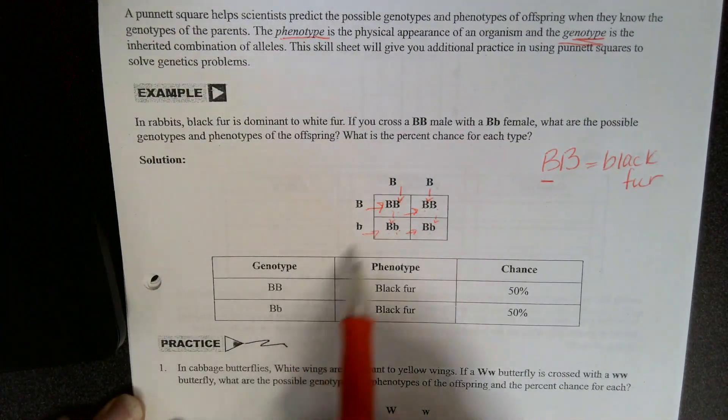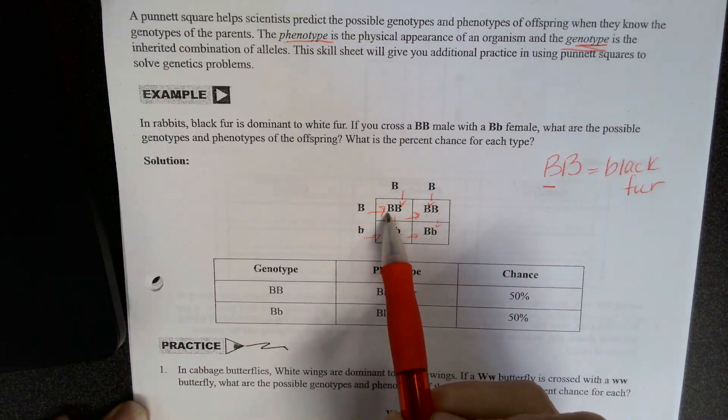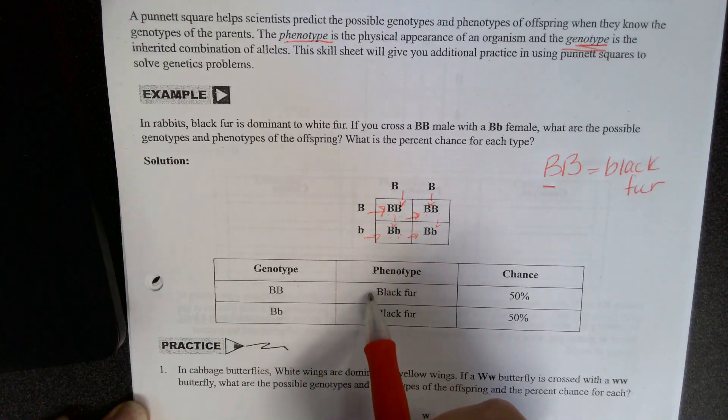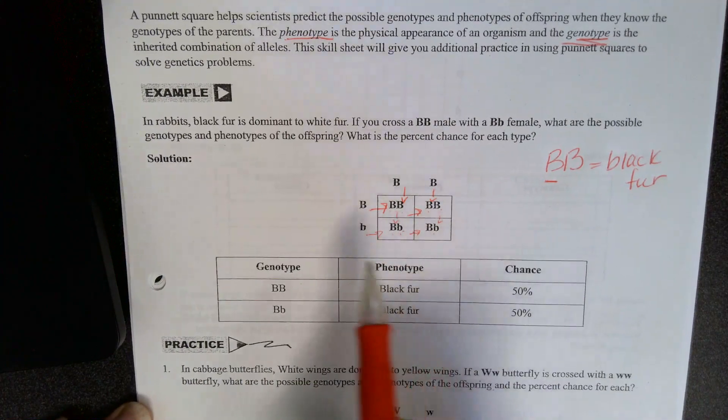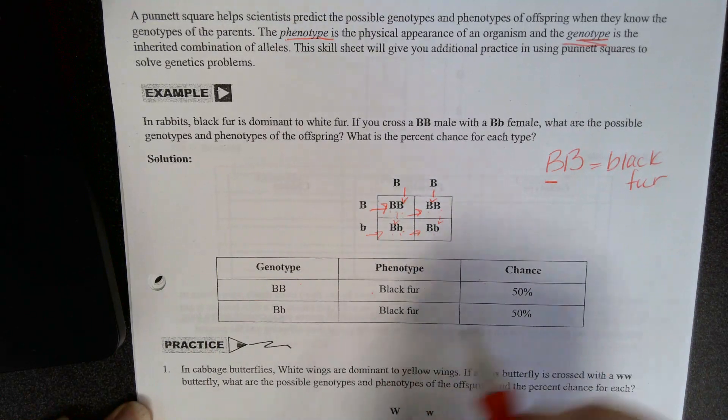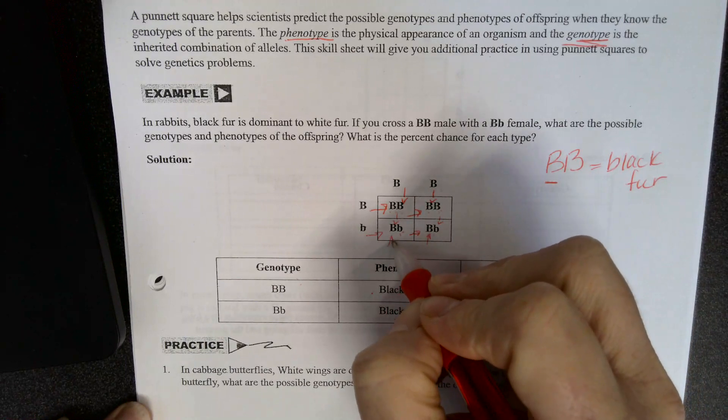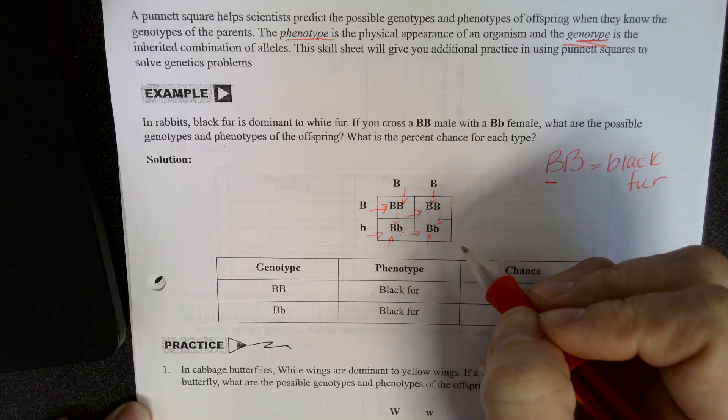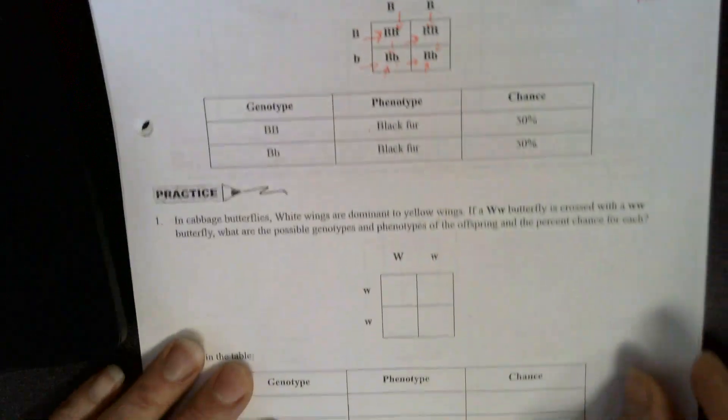So now we're going to look at what are the possible genotype combinations of this cross? Well, we have two of these. So big B, big B. This means black fur, and the chance of this happening was two out of four, which is 50%. Then our other possibility was big B, little b. This also means black fur because you have the dominant allele. And for the dominant allele, if it is there, it will always show up in the offspring, which is also 50%.